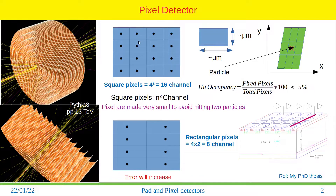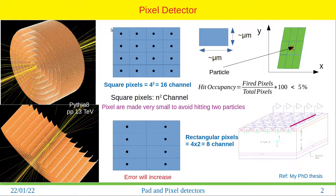Now we can merge two pixels in one direction. In this case the geometry will have one dimension larger and the other similar to before — these are called rectangular pixels. If you measure the position of the particle, your uncertainty in the shorter direction will be similar to before, but in the longer direction your uncertainty will increase. The advantage is that the number of channels is reduced — basically half, because you are merging two pixels — so you have fewer channels.